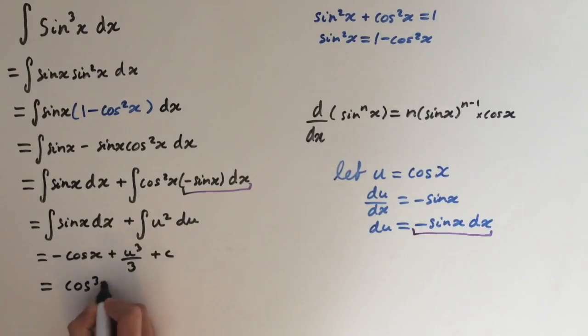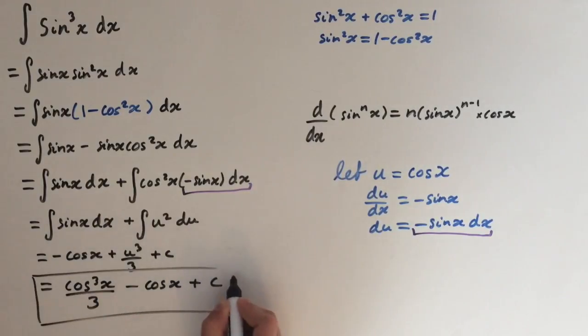cosine cubed of x over 3 minus cosine of x plus c. So there you go, the integral of sine cubed of x.